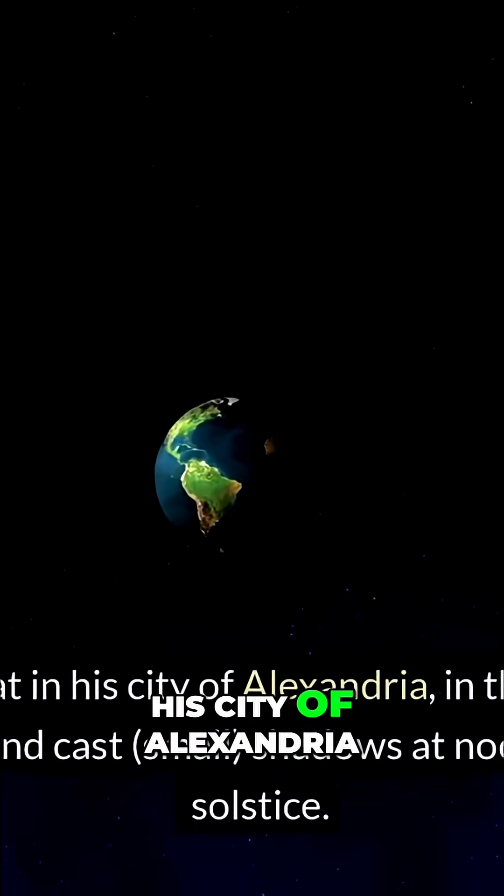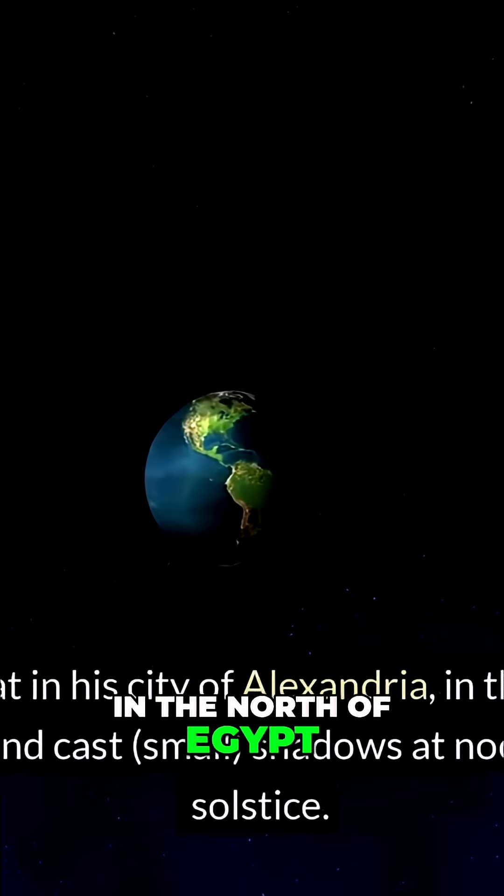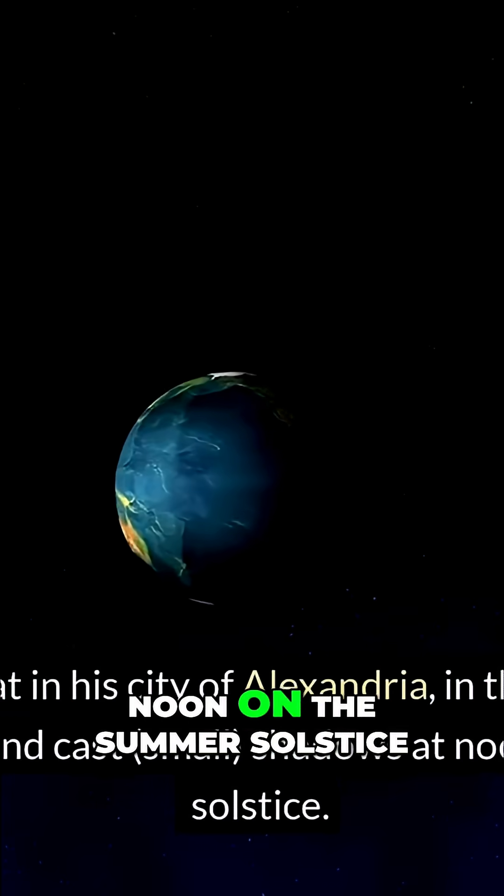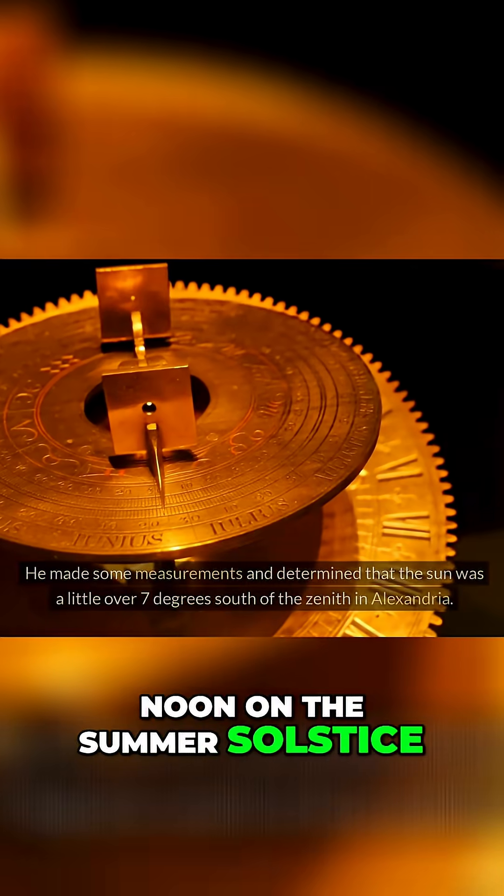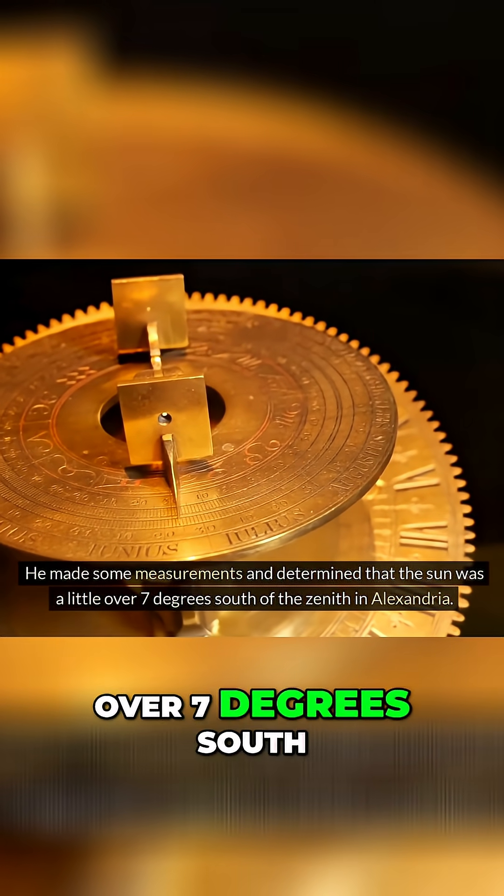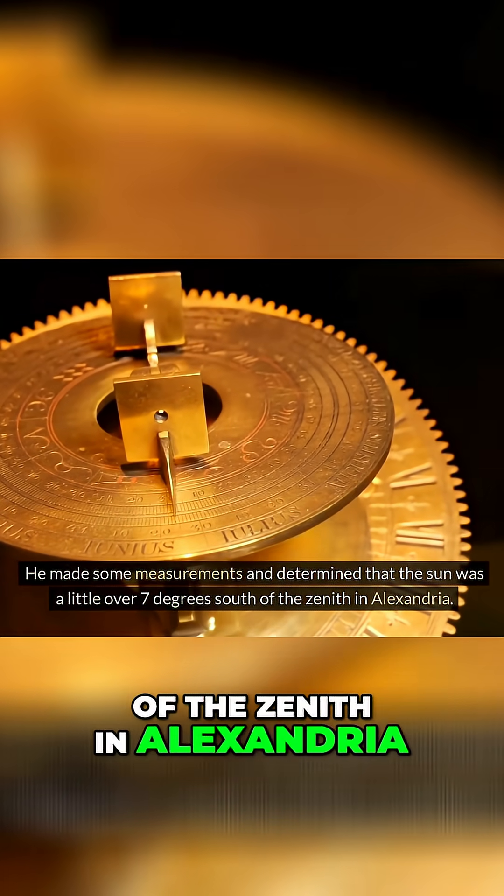He also knew that in his city of Alexandria, in the north of Egypt, posts in the ground cast small shadows at noon on the summer solstice. He made some measurements and determined that the sun was a little over 7 degrees south of the zenith in Alexandria.